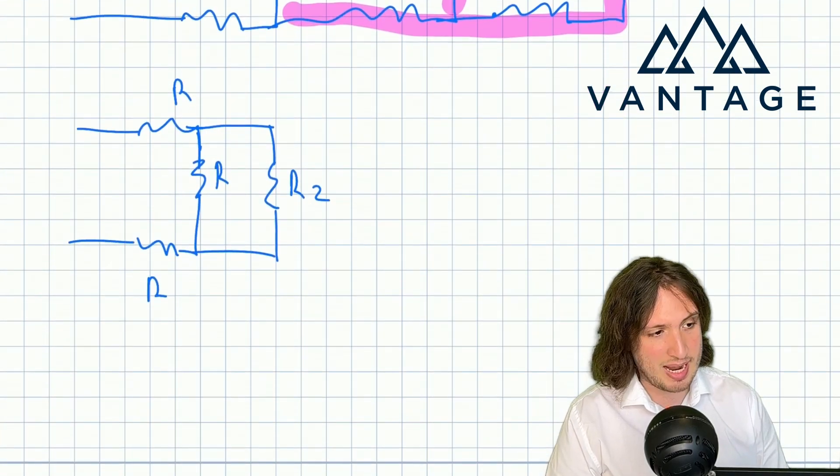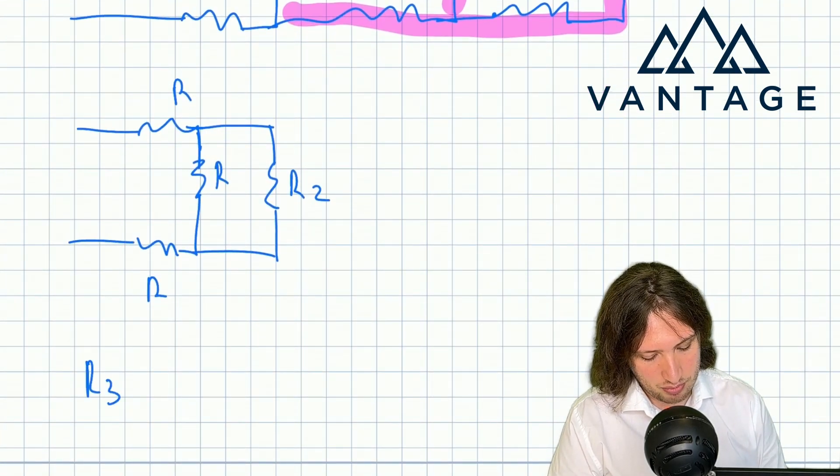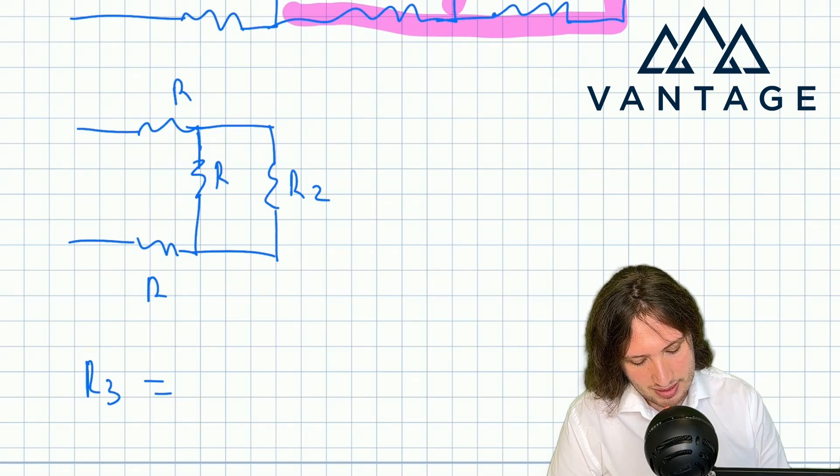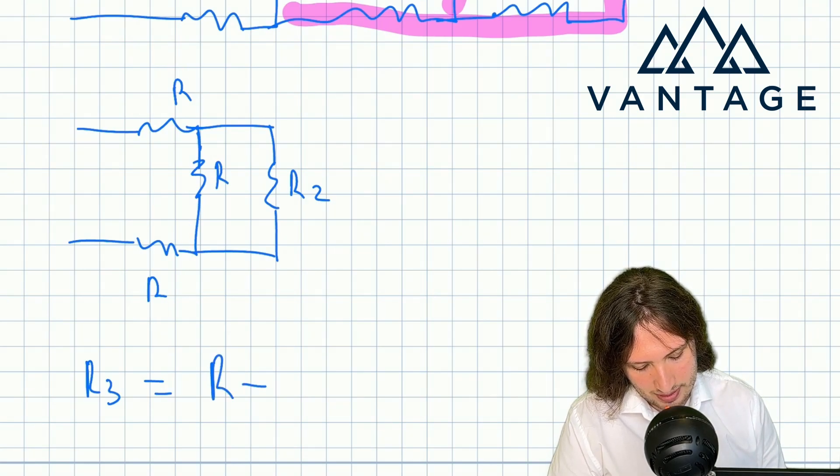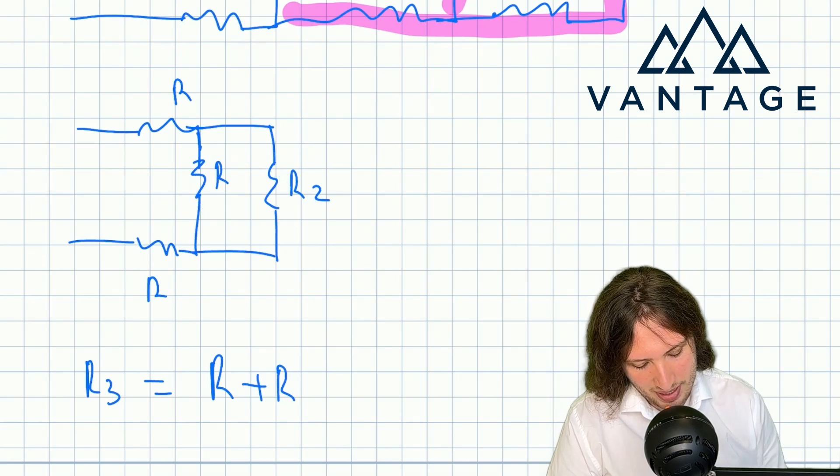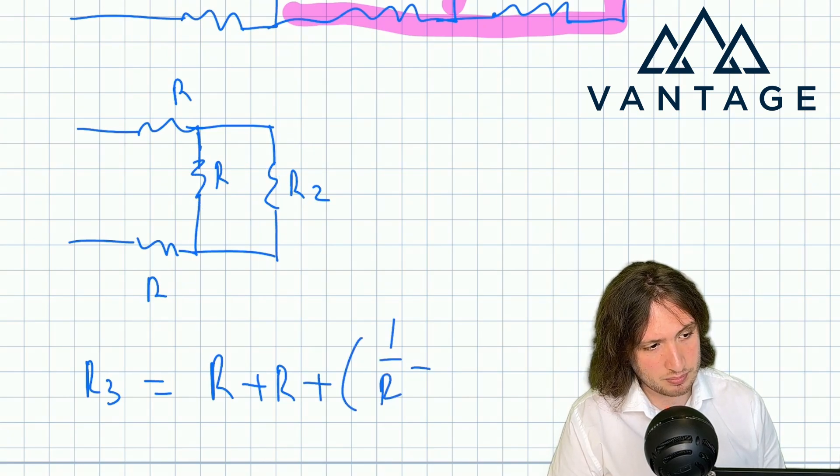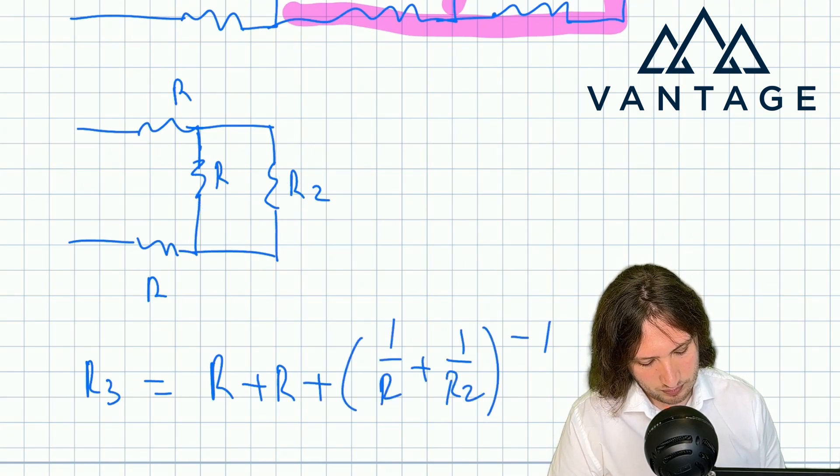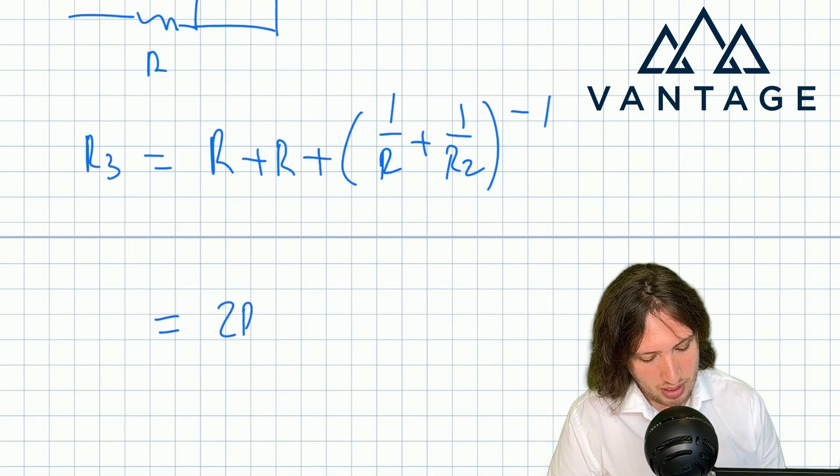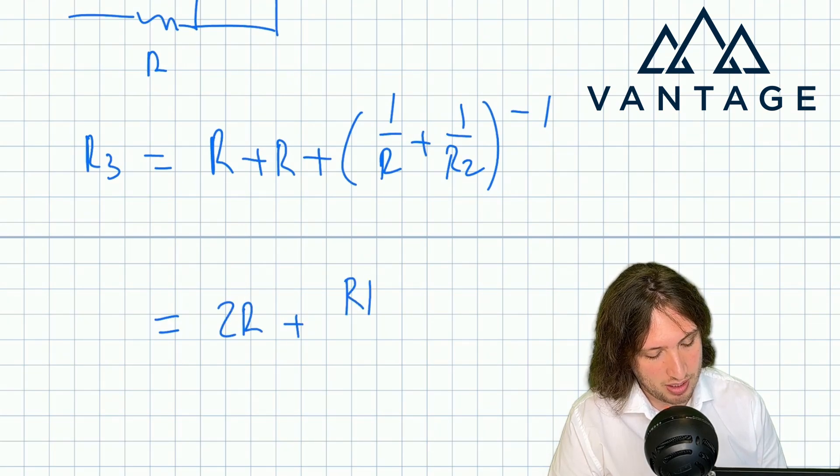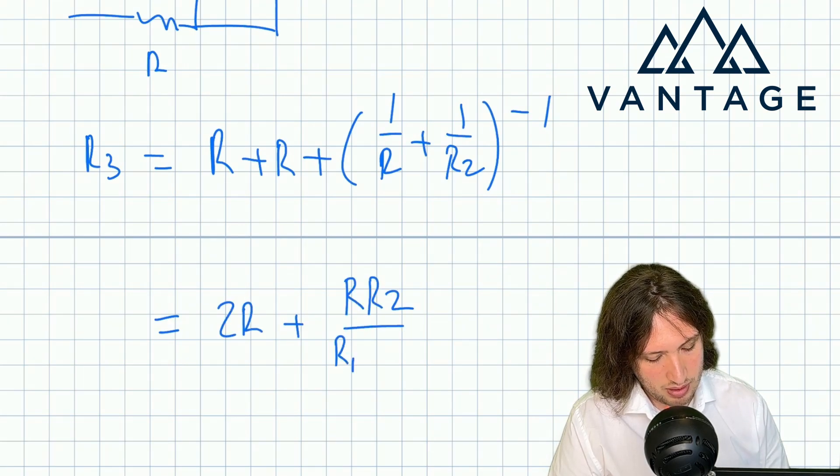So what I can now see is that R3 is, so I've got this is in series, this is in series, and then these guys are in parallel. So that's going to give me 2R plus, and if you do the algebra, R times R2 over R plus R2.